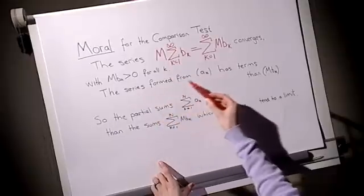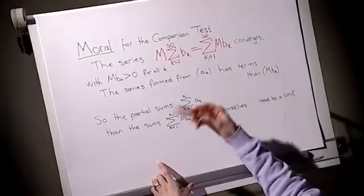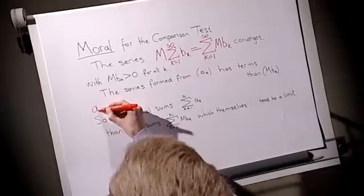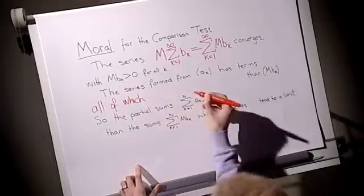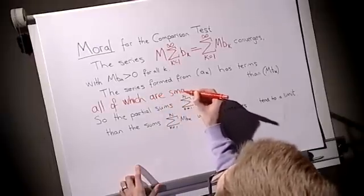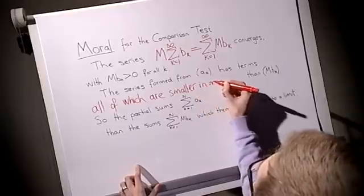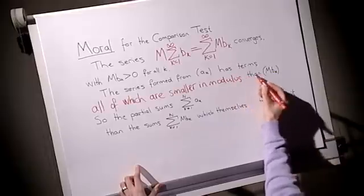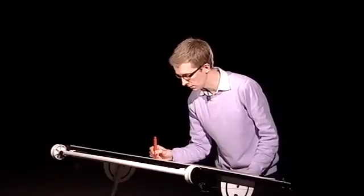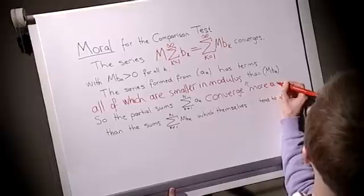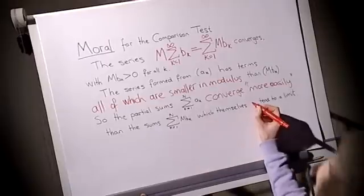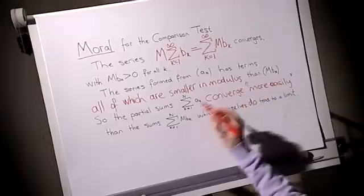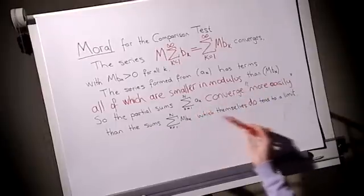That's not too hard to arrange. The series then formed by the ak's has terms which, according to the theorem, have to be smaller in some way than the mbk's. What the theorem says is that all of these terms, all the ak's, need to be smaller in modulus than the terms of the mbk sequence. So the partial sums of the terms of the ak need to converge more easily than the sums of the mbk's, which themselves already do converge. So because the mbk's converged and the ak's were in some sense smaller, that made the ak's converge.